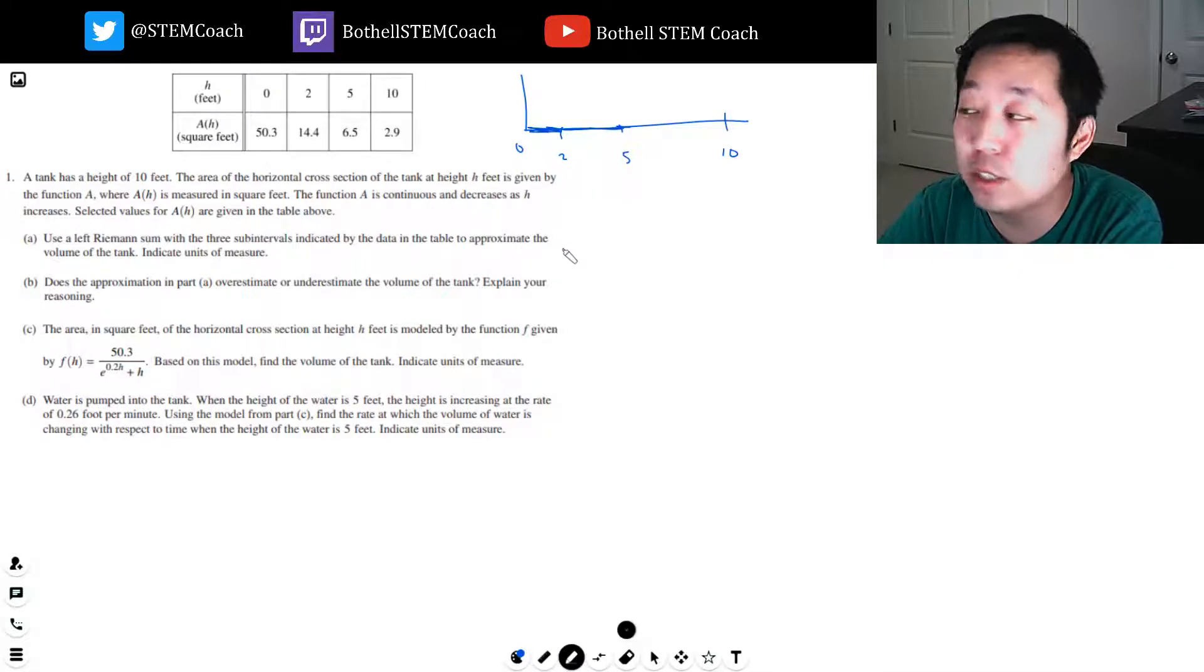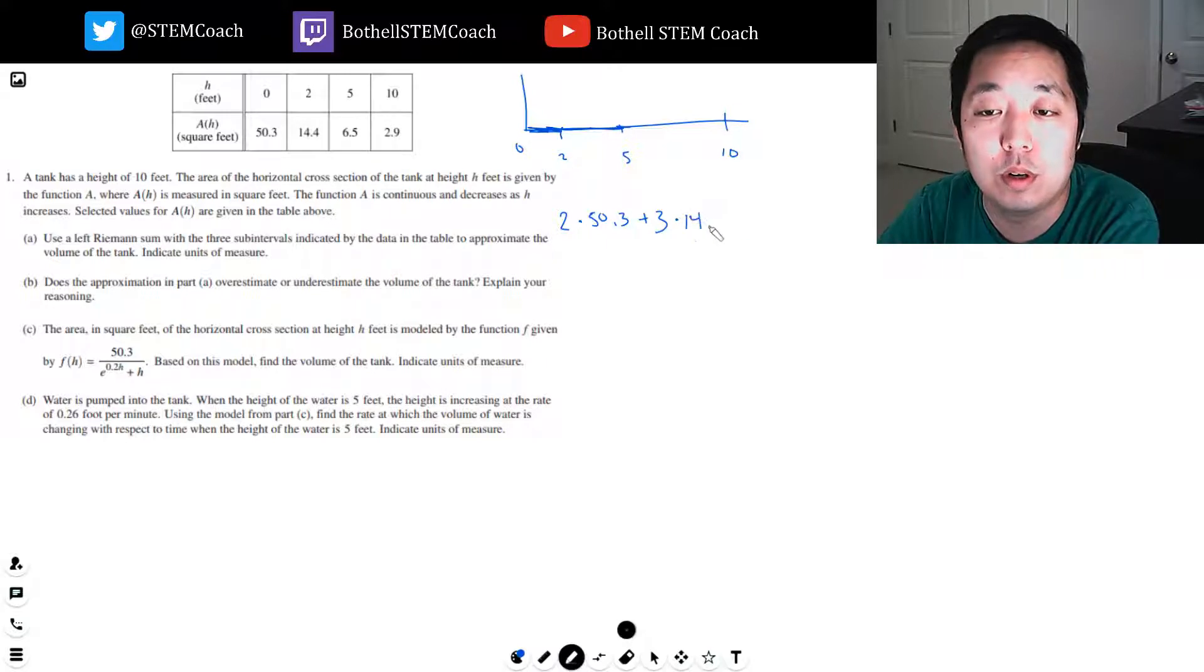So for this one, I just want to make sure you guys can see it. I want to do the height of the rectangle. I use the left point times the width. The first one is 2, has a width 2, and the height is 50.3, plus this width is 3 times the left endpoint would be 14.4, plus the last sub-interval is 5 to 10, which is 5 times 6.5.